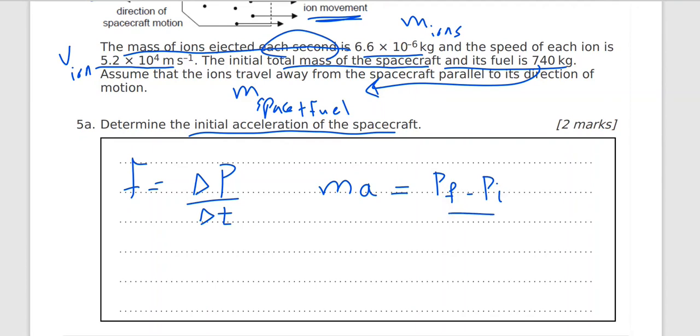Okay. And I need the acceleration. So acceleration will be P final minus P initial divided by M. Divide both sides by M, mass of the spacecraft. So P initial is 0.